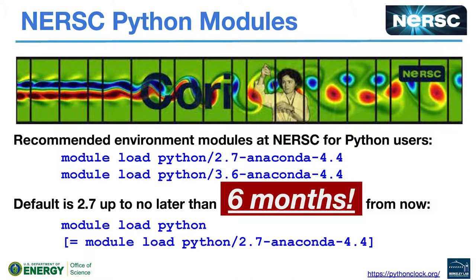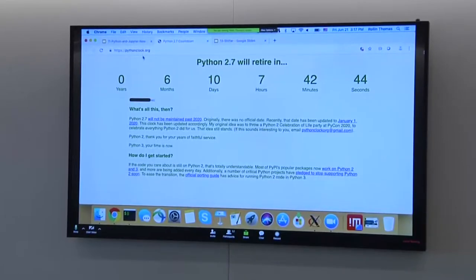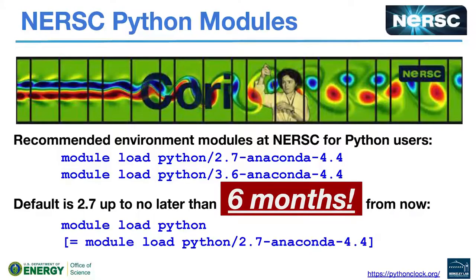We'll keep 2.7 as the default module, so if you do 'module load python' it will load Python 2.7 until the end of this year when 2.7 is done. How many people have switched to Python 3? Those of you still on 2.7 are on borrowed time — you have six months. There's a handy website with a countdown to exactly when Python 2.7 will retire, and there's supposed to be a party at PyCon 2020.